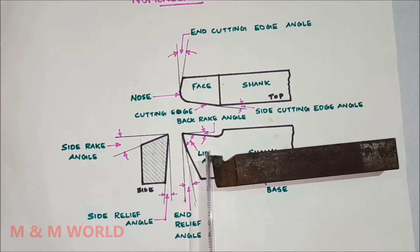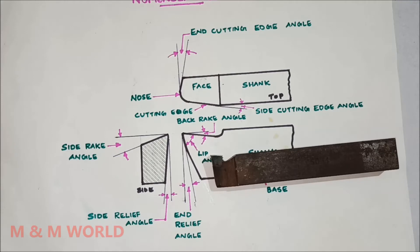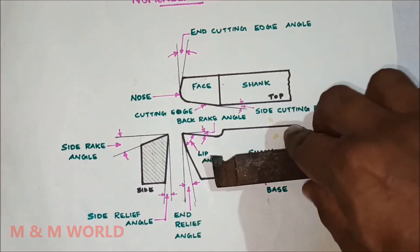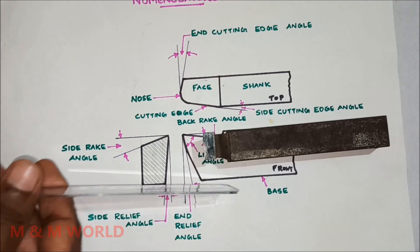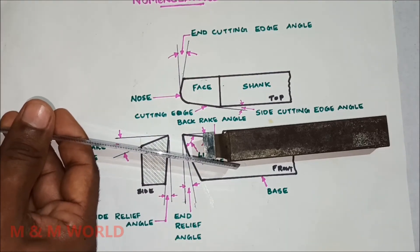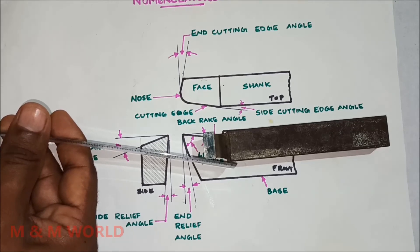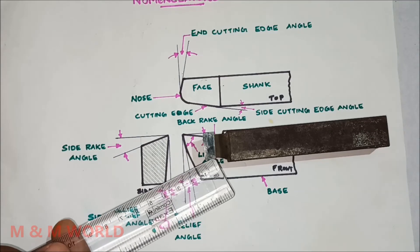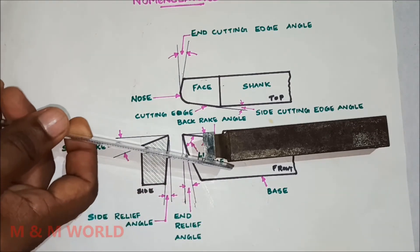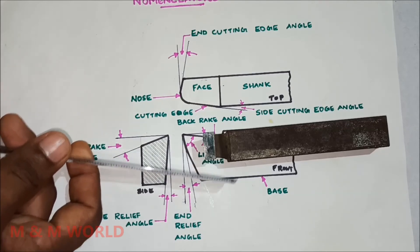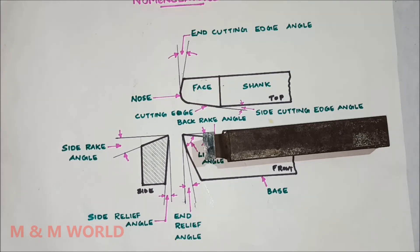The side cutting edge angle is the angle between the side cutting edge and the side of the tool shank. You can see it in the top view — this angle between the side cutting edge and the side of the tool shank is what we call the side cutting edge angle.